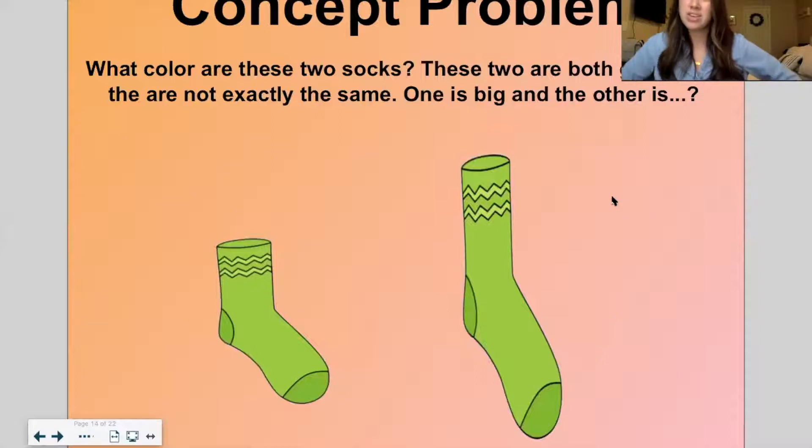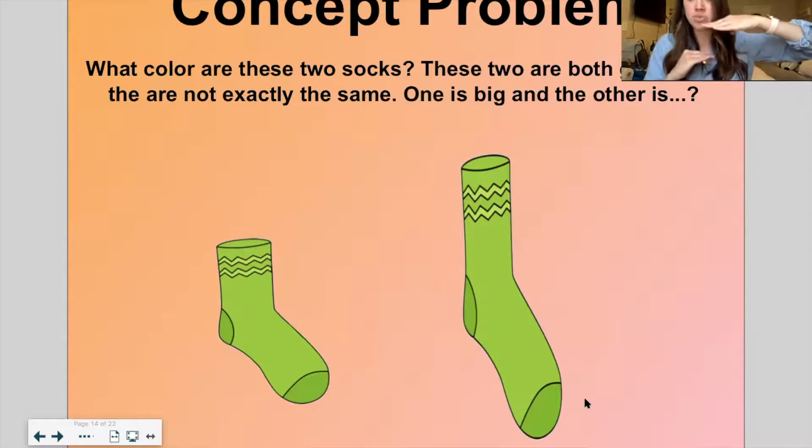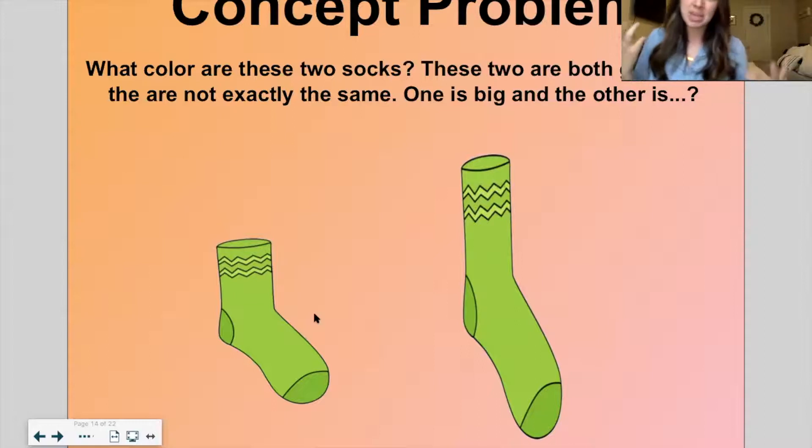What color are these two socks? Green. These two are both green, but they're not exactly the same. One is big. It's tall. Maybe like a mom's or dad's or grandma or grandpa's sock. And the other one is small. Yeah. This one is small. It's shorter. So they're the same pattern. They're the same color, but they're not exactly the same because one is tall and one is short.